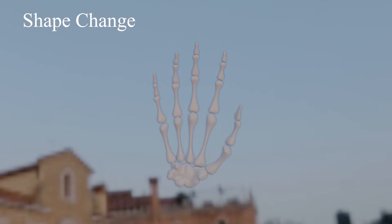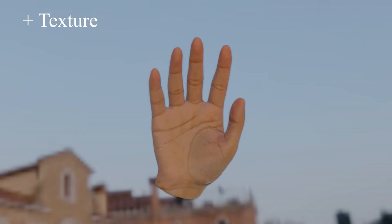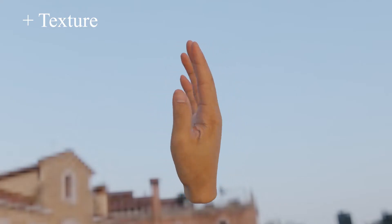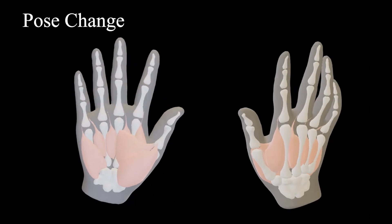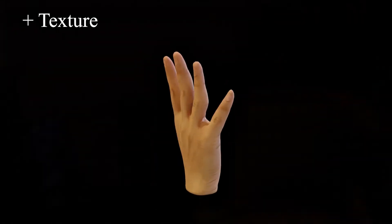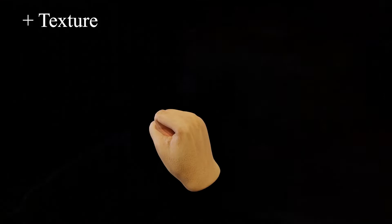We present NIMBLE, a non-rigid hand parametric model with bones, muscles, and skin to bring 3D modeling of dynamic hands to a new level of realism. NIMBLE contains template meshes, kinematic tree, shape blend shapes, pose blend shapes, and a joint regressor, together with photorealistic textures. NIMBLE can animate 3D hands to new poses at unprecedented realism.